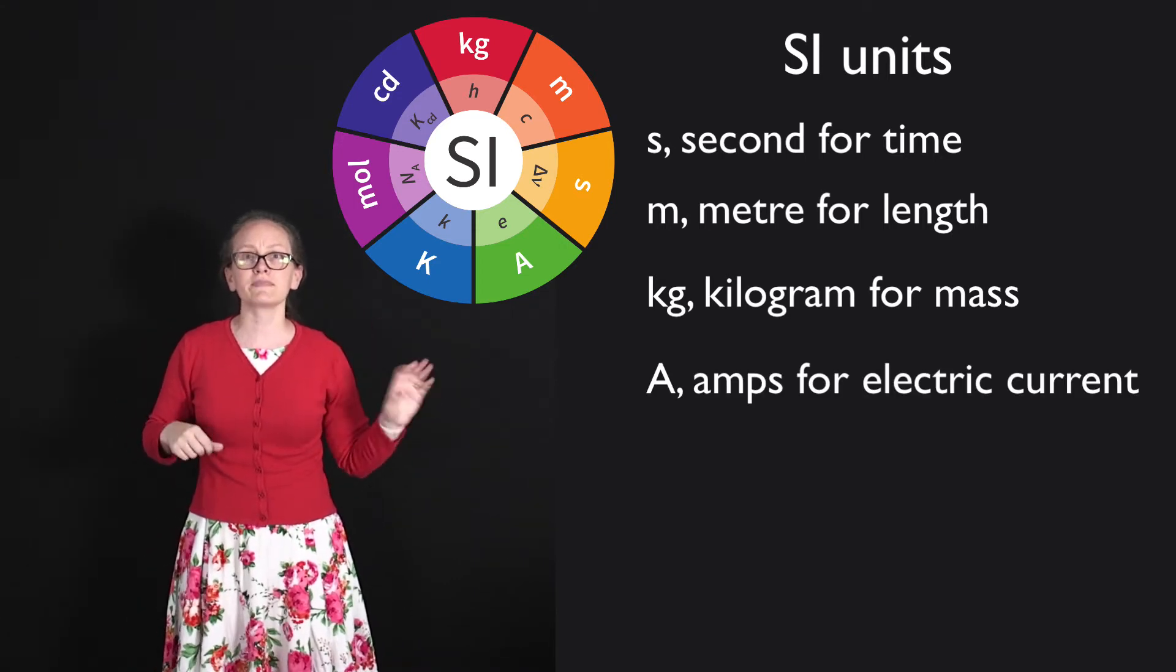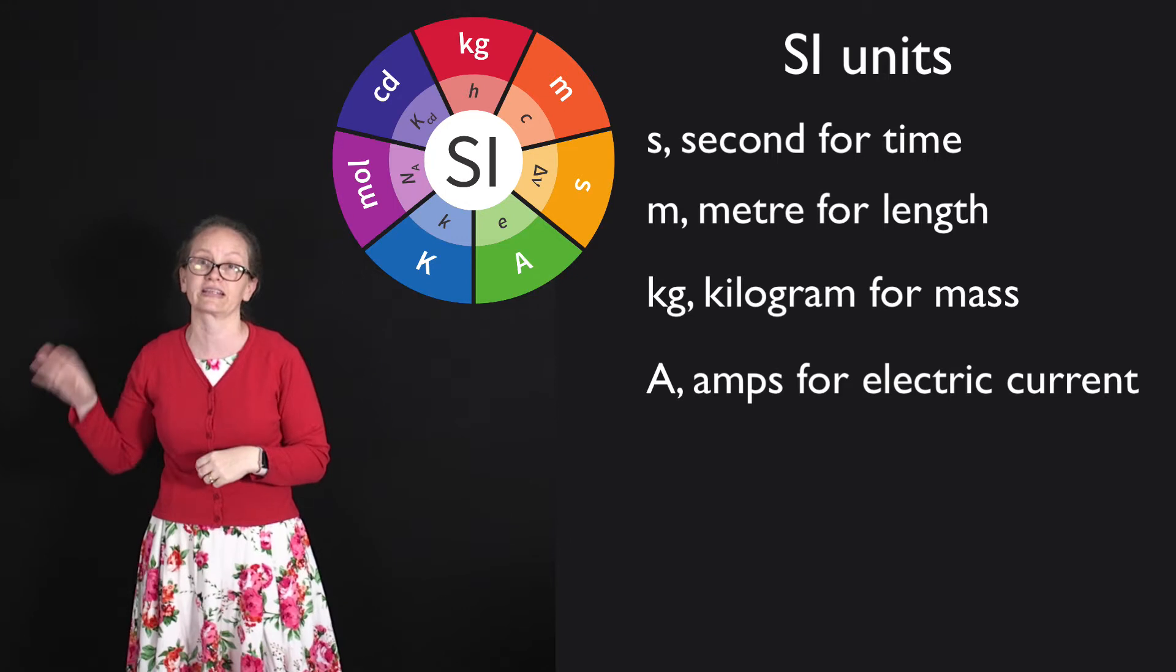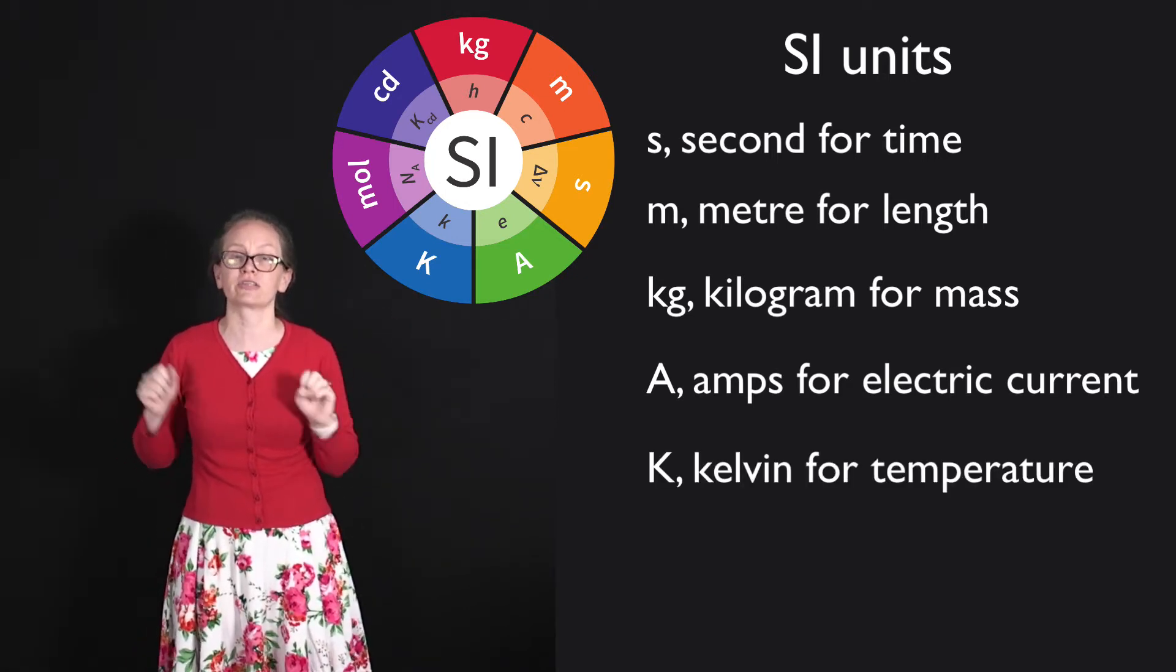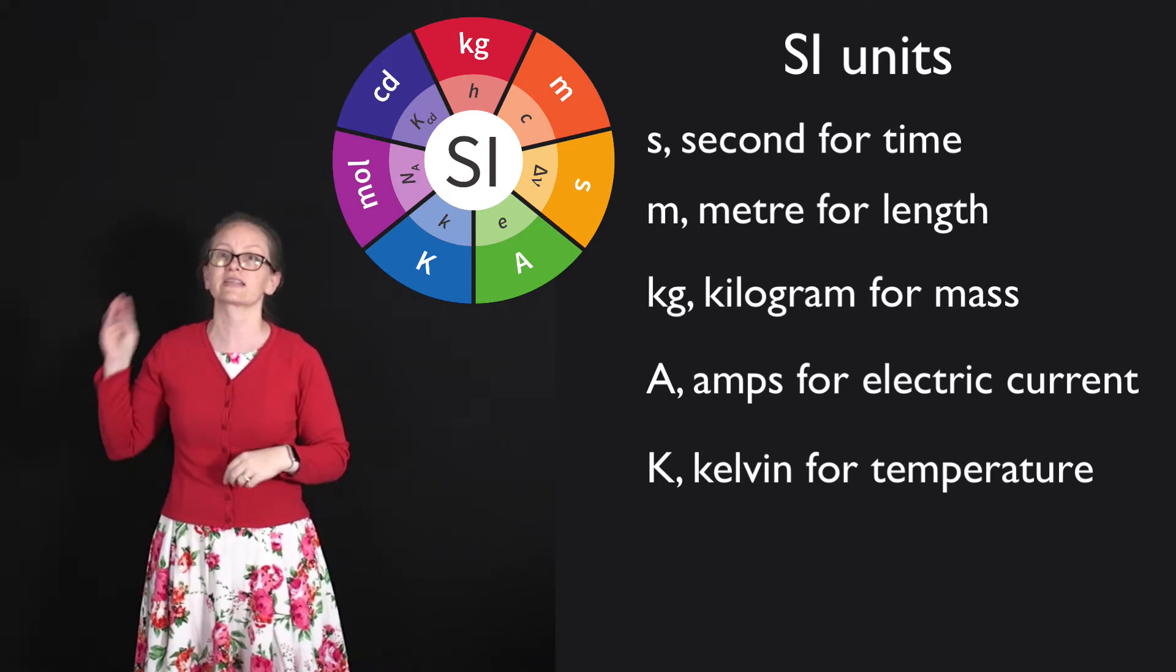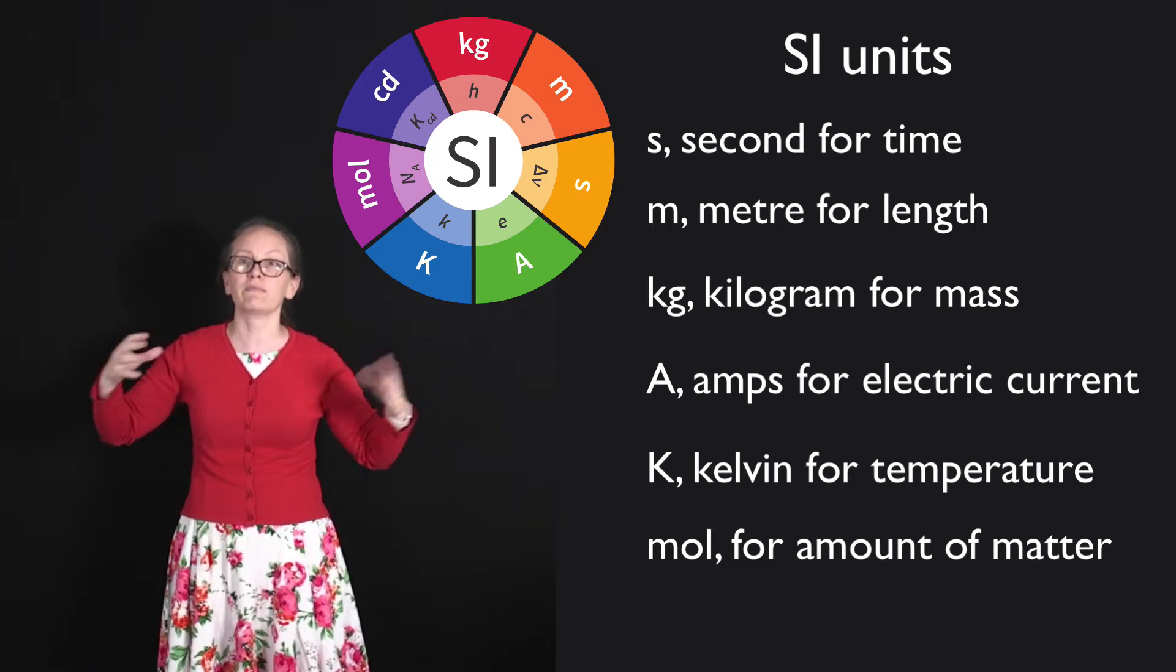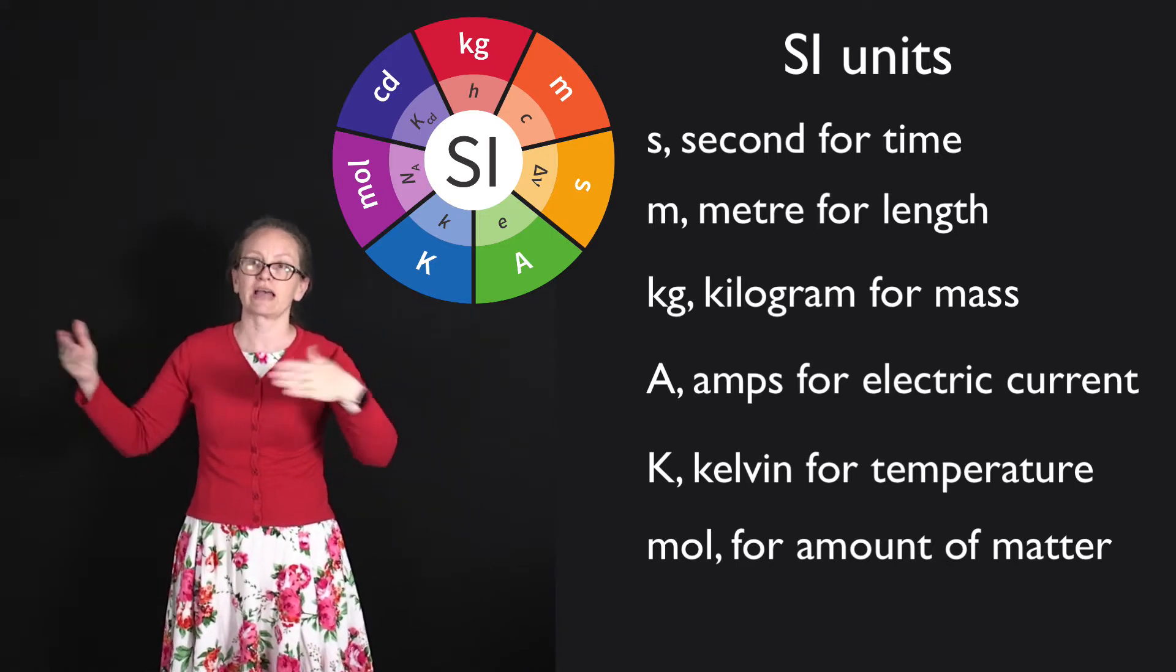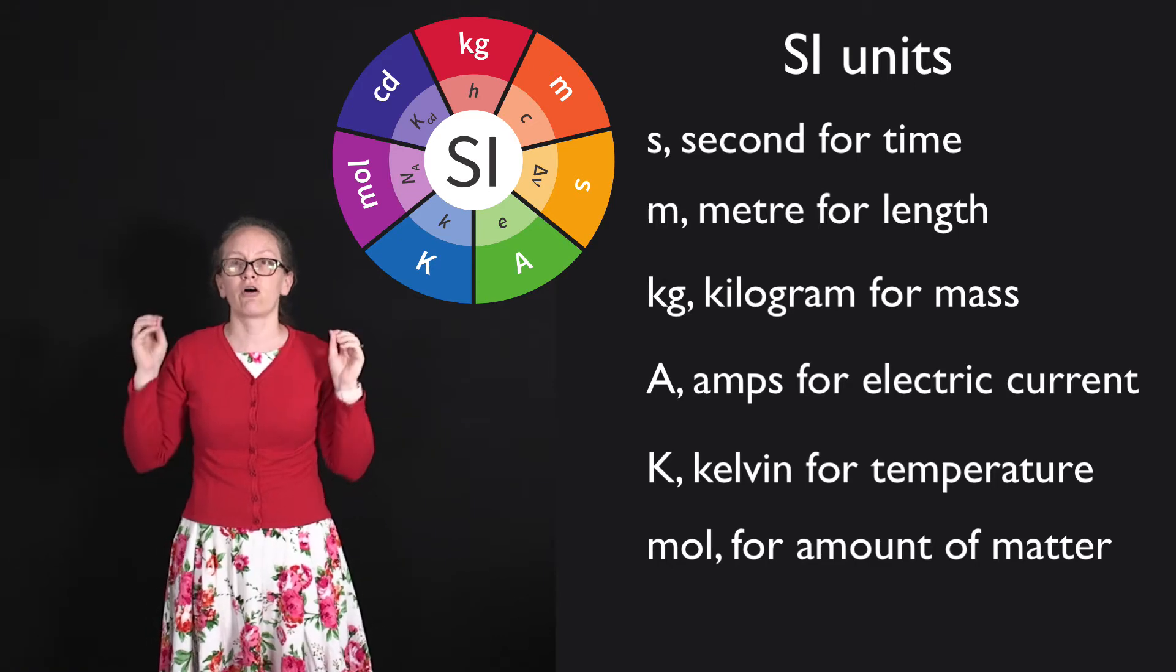There's also amps for current, and to measure that we need to know the charge on an electron, E. We've got Kelvins, K, for temperature, and to get that one, we need to know Boltzmann's constant, K. We've got moles, which is the amount of matter, and one mole is equal to the number of atoms, which is Avogadro's number, in 12 grams of carbon-12.